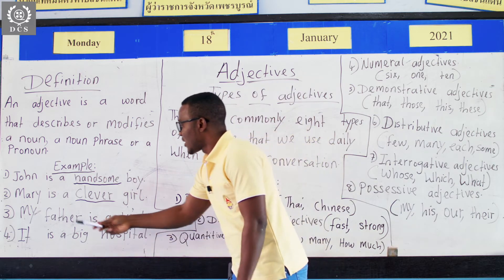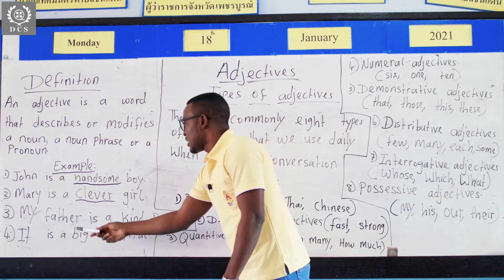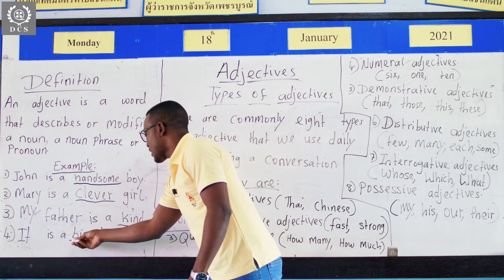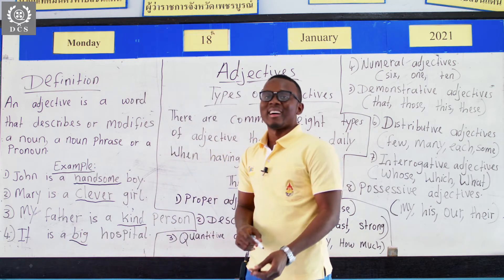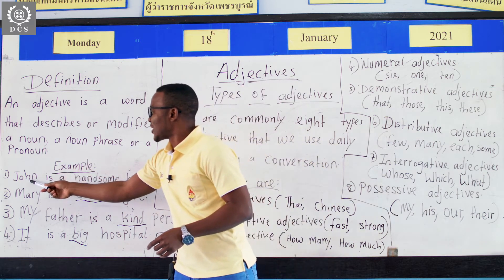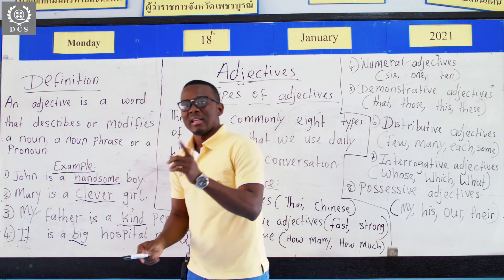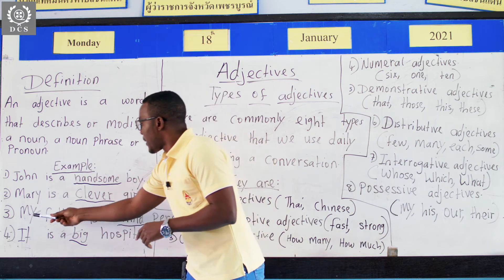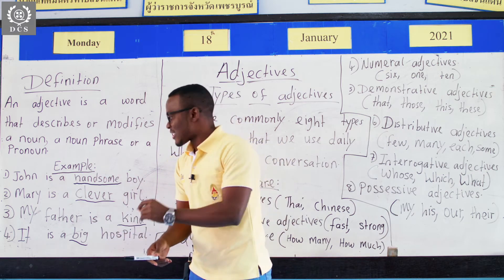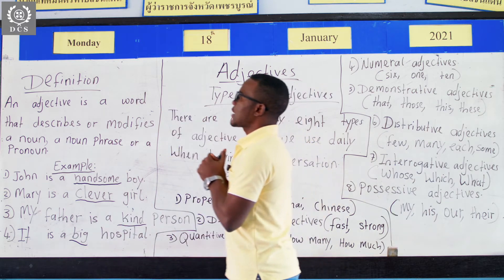Four: It is a big hospital. So the adjective here is 'big.' You can see that John is a noun, Mary is a noun, my father is a noun phrase, and 'it' here is a pronoun. My father is a noun phrase.